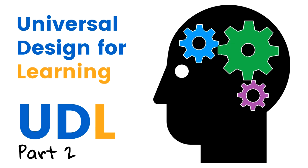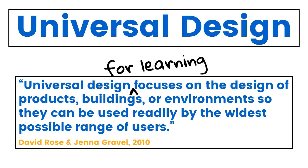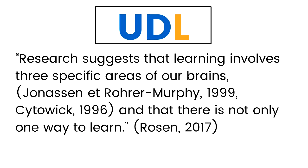So what exactly is Universal Design for Learning? Since it's based on universal design, we can pretty much go with that same definition and just add 'for learning.' In particular, UDL is based on two assumptions. The first lies in research suggesting that learning involves three specific areas of our brains, and the second, that there's not only one way to learn.